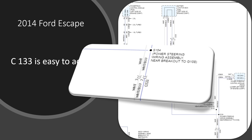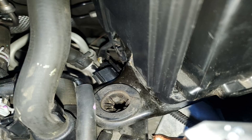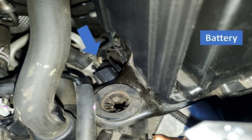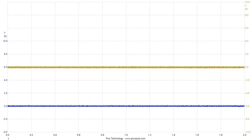Disconnecting C133 will take out the PCM and the power steering control module. The battery is to the right of this picture, and C133 is just to the left of the battery from this perspective. Unfortunately, the network is still shorted, so let's go after the next one.